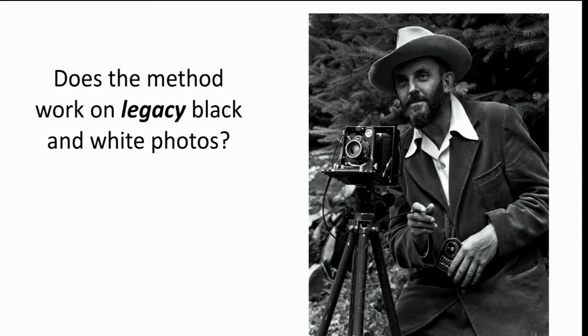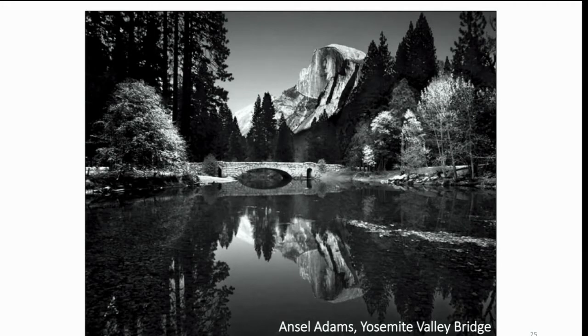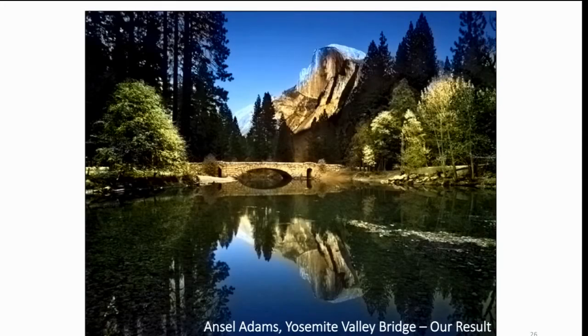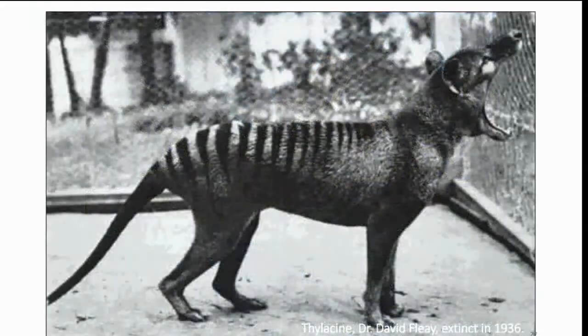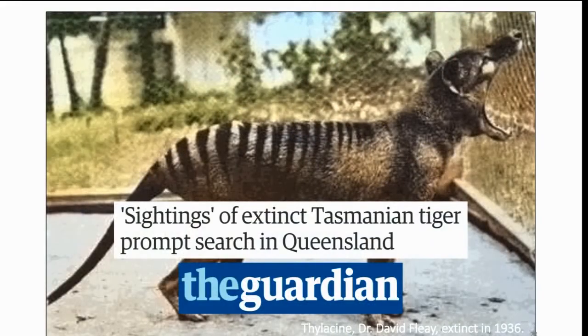We trained the system on a million ImageNet color images. As a way to test it, we looked at how well it did on legacy black and white photos. If we look at this iconic photograph of Yosemite Valley Bridge from Ansel Adams, we can imagine that perhaps the sky is blue, the mountain is maybe brown, and the vegetation is most certainly green. Our system does something pretty reasonable with this photograph. We can also try it on an extinct animal. This has been in the news recently, so maybe we'll get to actually check this against ground truth if we're lucky.